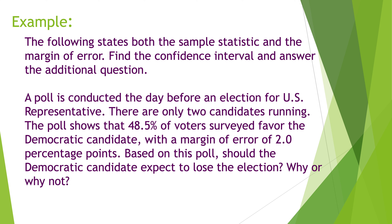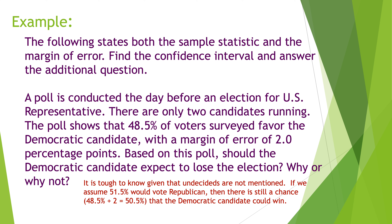That's an interesting question because they don't mention any undecideds. Assuming there are none, if 48.5% vote Democrat, then 51.5% would have voted Republican. However, there is still a chance the Democratic candidate could win, because he could go up two points to 50.5%, and the Republican could go down two points to 49.5%. So the margin of error means the Democrat's range is 46.5% to 50.5% — and at 50.5% with only two candidates, you could squeak out a win. It's not guaranteed you'd lose, though it suggests you would.